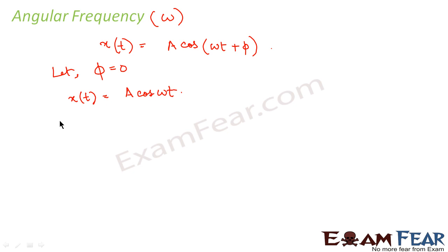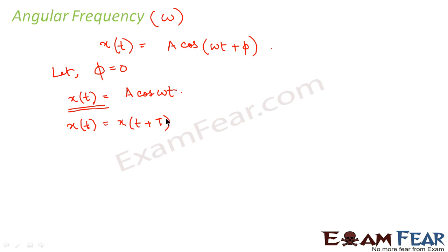Now as we know that it is a cosine function, so it will repeat itself after 2π. Similarly, since it is a simple harmonic motion, after a time period of capital T, x of t will also get repeated. So we can say that x(t) is equal to x(t + T) — that is, after this much time period the motion will get repeated. So we can say that A cos(ωt) is equal to A cos(ω(t + T)).